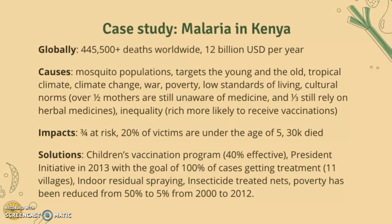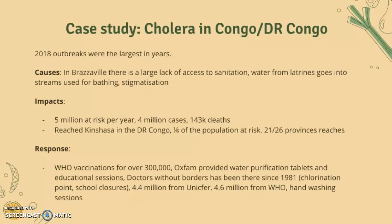Other solutions include indoor residual spraying — spraying chemicals to deter and kill mosquitoes — and insecticide-treated nets, used to provide a barrier while sleeping so mosquitoes can't reach you at night. Poverty has been reduced from 50 percent to five percent between 2002 and 2012.